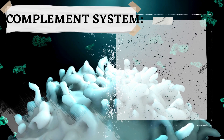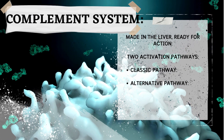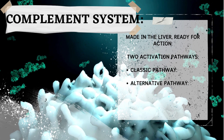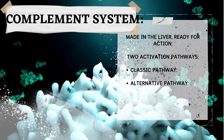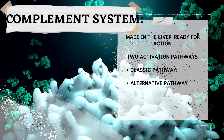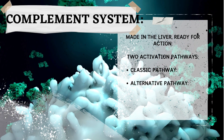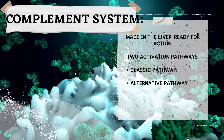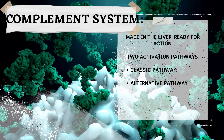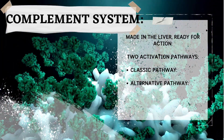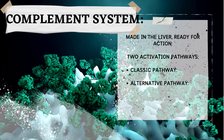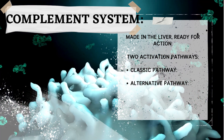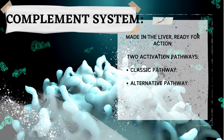Complement system — your body's built-in bug zappers. Made in the liver, the liver manufactures proteins called complement proteins but keeps them inactive until they're needed. These proteins circulate in your blood like undercover agents, waiting for a signal to attack.